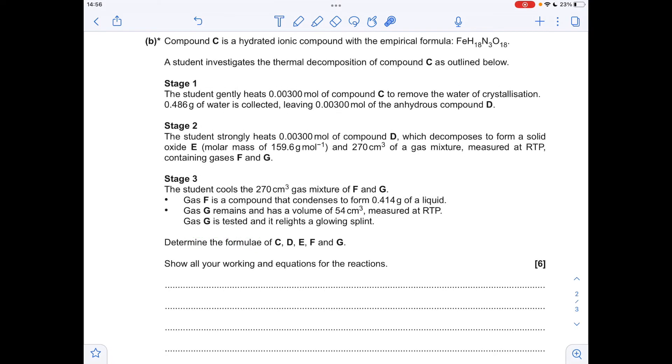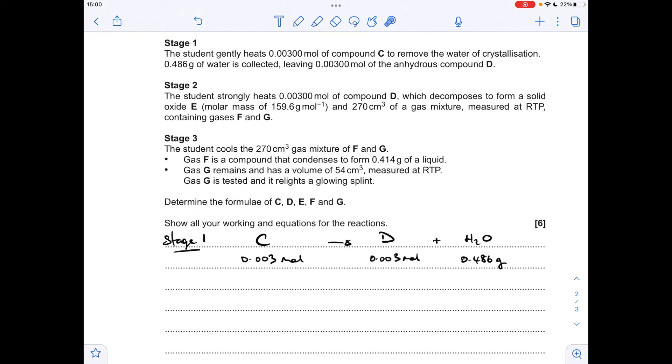So moving on to part B now, we've got to determine the formula of C through to G. Show all our working and equations for any reactions that have taken place. Before I'm even thinking about anything, I'm looking at these atoms here and I'm thinking nitrate because we've got nitrogens and oxygens in there. So we'll start with stage one. The student's gently heated that many moles of C, removes the water of crystallization and makes that many grams of water, leaves that many moles of anhydrous compound D. So you can see I've turned that into an equation there. You can see that from the mass of H2O, we can work out how many moles that is. So that's coming out at 0.027 moles of H2O. So the ratio between D and H2O is 1 to 9.